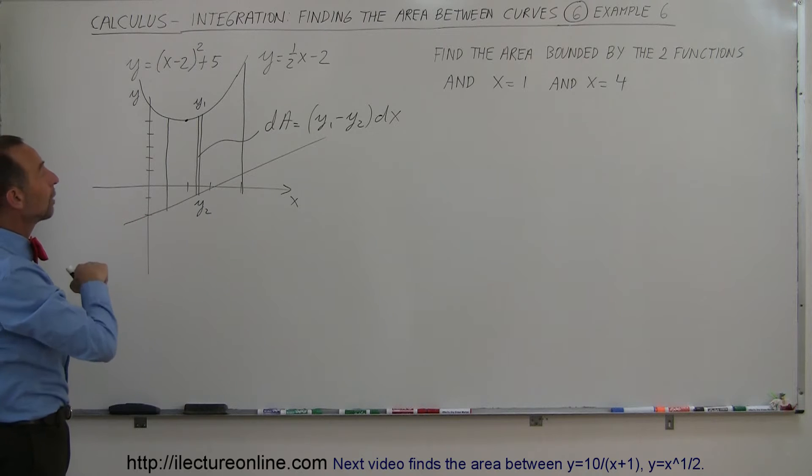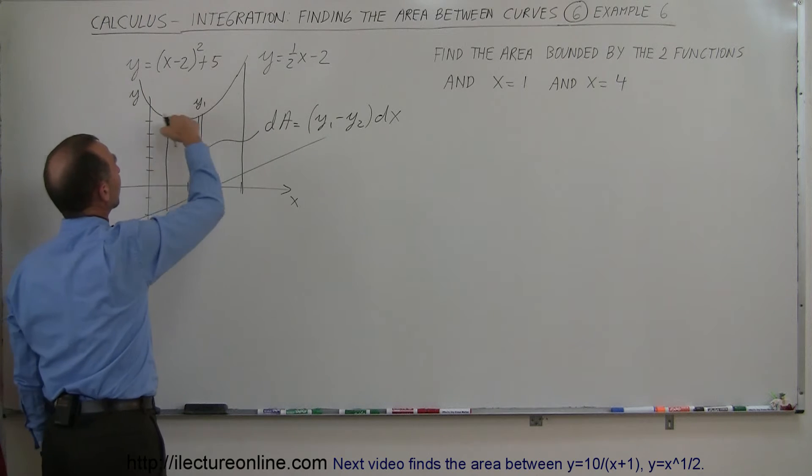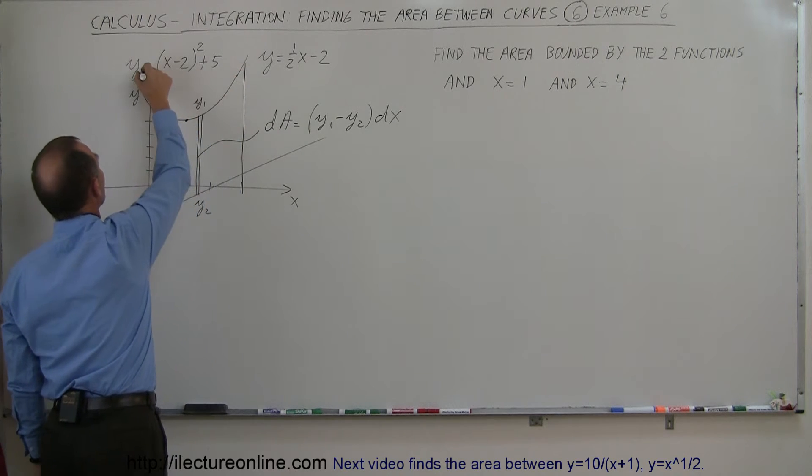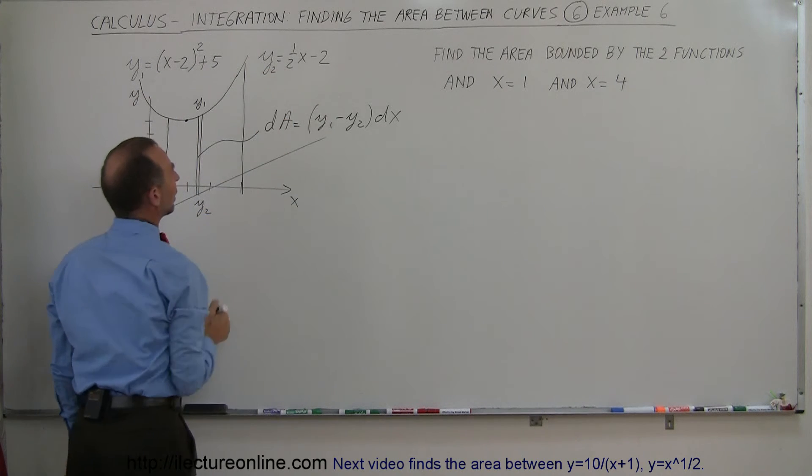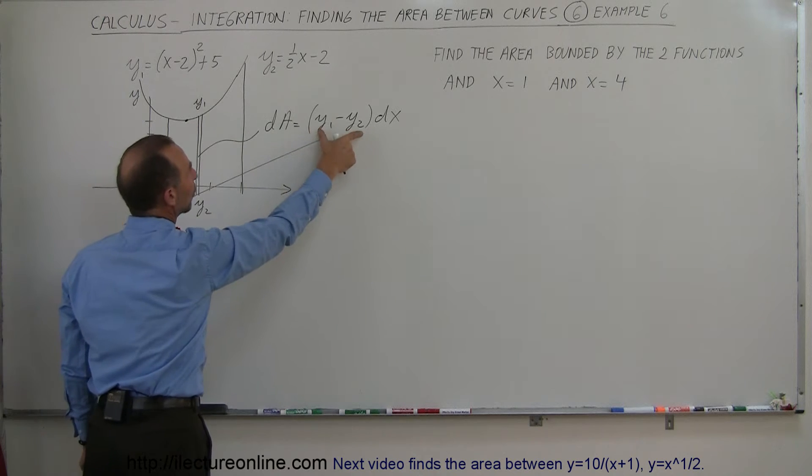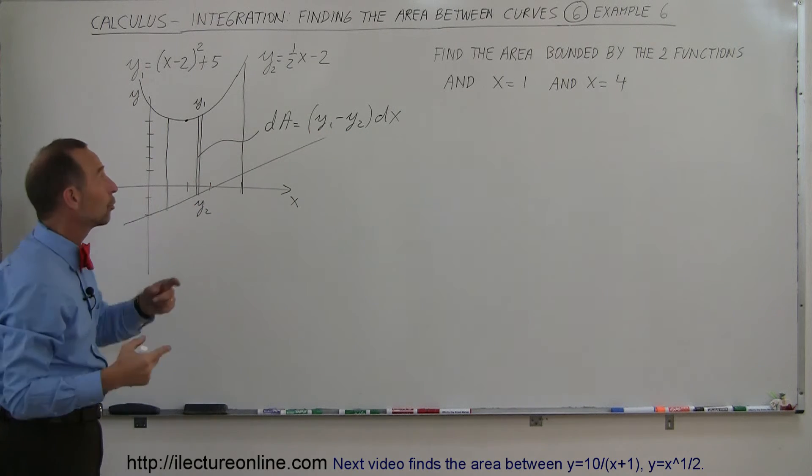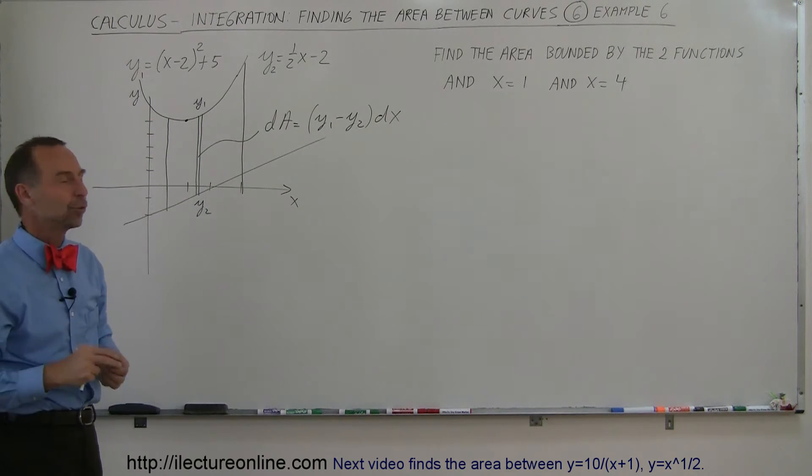So let's call this y1, let's call this y2. And so the height would be equal to the upper limit, which is y1 minus the lower, which is y2. That would be the height of the little rectangle and the width would be a small dx.